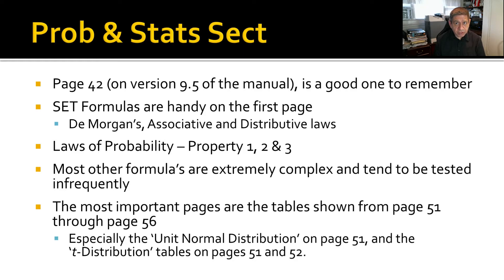Most of the other formulas are extremely complex and tend to be tested infrequently, at least in my experience and what I've heard from others. The most important pages are the tables shown on page 51 through 56, especially the unit normal distribution, which is on page 51, and the t-distribution tables on pages 51 and 52. In general, with the FE manual, tables in particular are the most useful aspect of it. So focus on the tables in general.